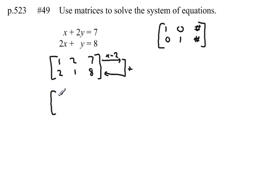So I'm keeping the top line the same. 1, 2, 7. My new bottom line is going to be the top line times negative 2 added to the bottom. So 1 times negative 2 is negative 2, plus 2 is 0. 2 times negative 2 is negative 4, plus 1 is negative 3. 7 times negative 2 is negative 14, plus 8 is negative 6.